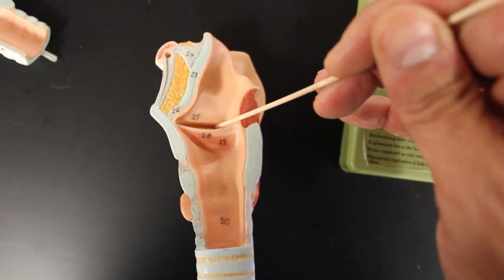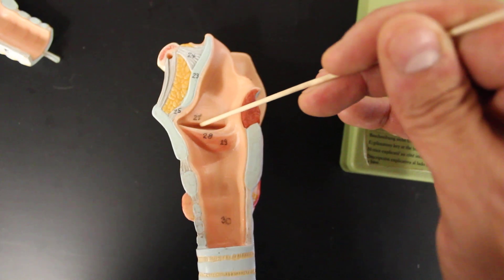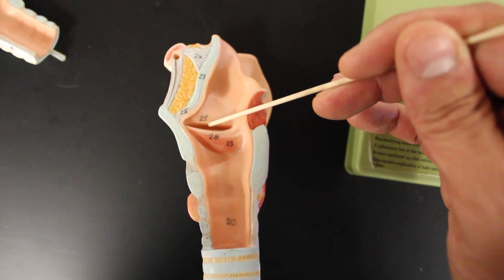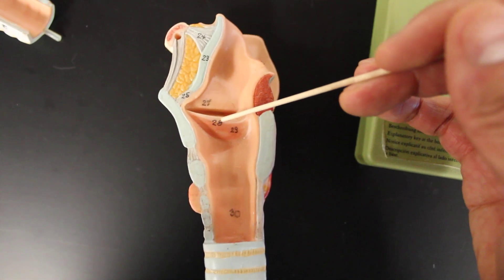In here as well we also see the slit of the glottis and then above is the ventricular folds covering over the false vocal cords. And then here's the vocal folds covering over the true vocal cords.